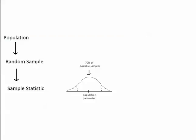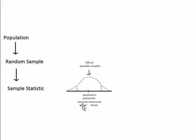Let's take a guess that 70% of the possible samples are between those two boundary points. If 70% of the possible samples or 70% of the possible combinations are in this middle area, then there's a 0.70 probability of getting a sample from this middle area. Which would mean that this distance and this distance would be the 70% margin of error — the distance from the population parameter to the boundaries of the area in which the sample statistic has a 0.70 probability of falling.